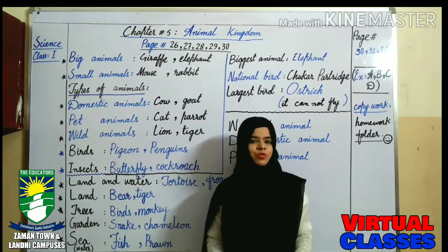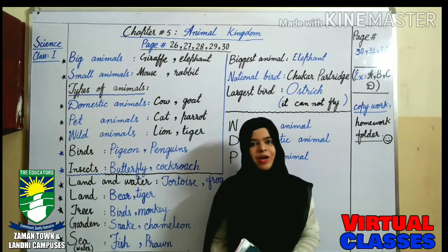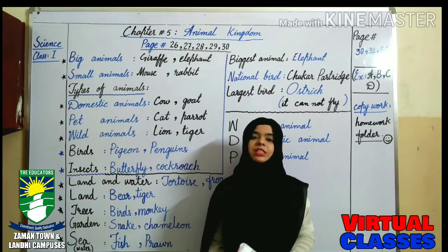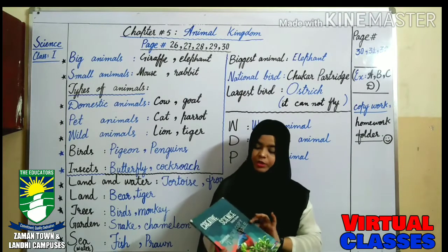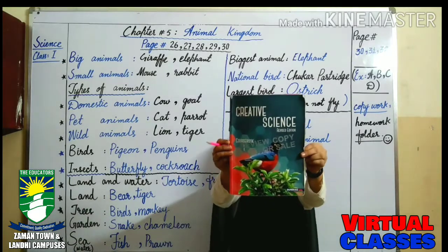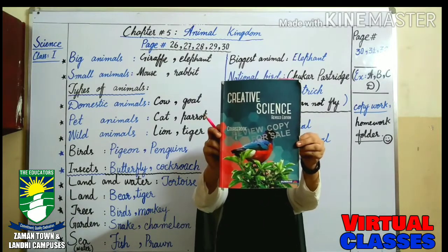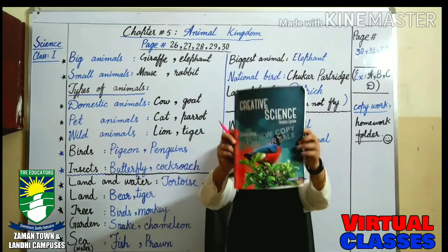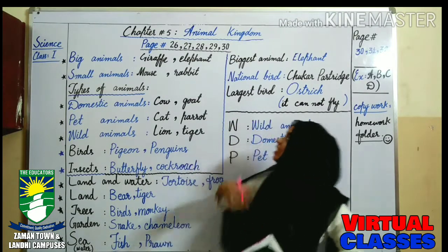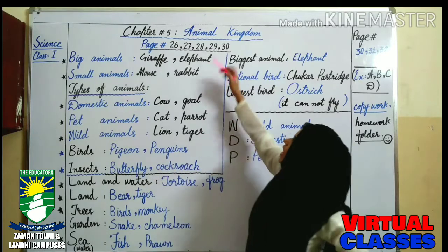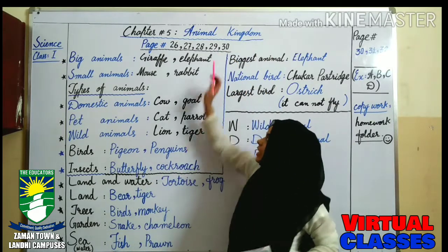As-salamu alaykum, Bismillahirrahmanirrahim. How are you all? Hope you will all be fine by the grace of the Almighty. This is our science class. You have to take out your science book first. Now in this class we will learn something new. We will read the new chapter — Animal Kingdom, chapter number 5.